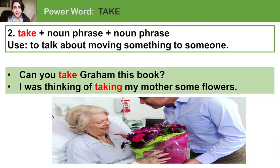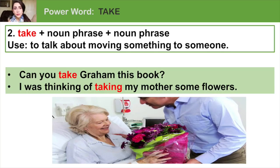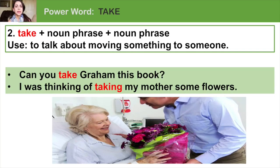The second pattern is take plus two noun phrases, and we use this to talk about moving something to someone. For example: Can you take Graham this book? The first noun phrase is Graham, and the second noun phrase is this book. We can also change the order — the first noun phrase becomes the object, and the second noun phrase is the person who's going to receive the action.